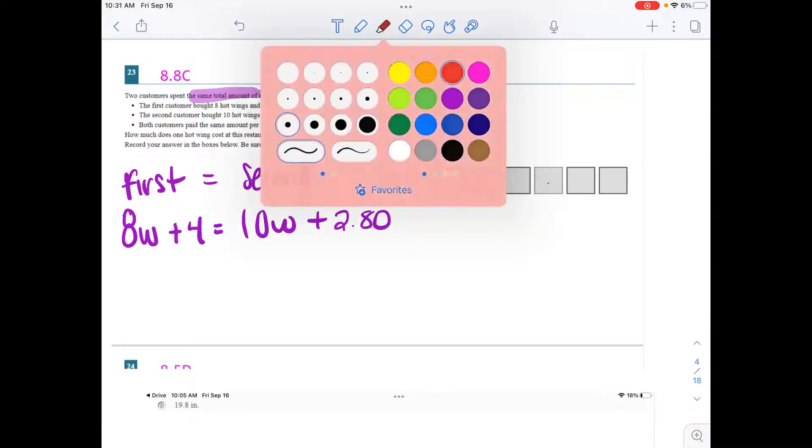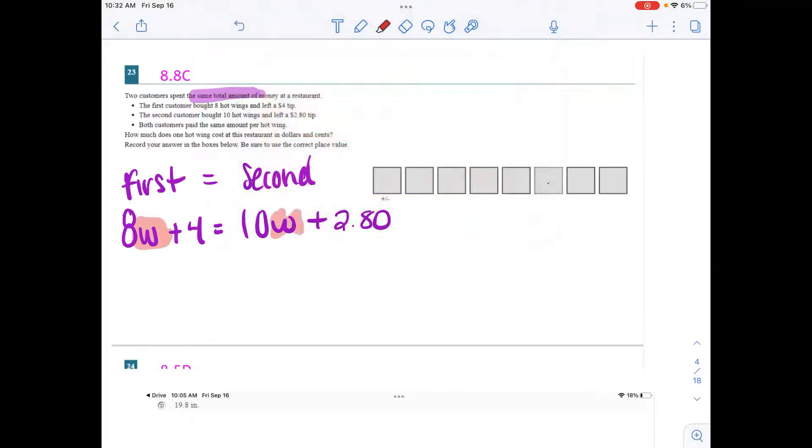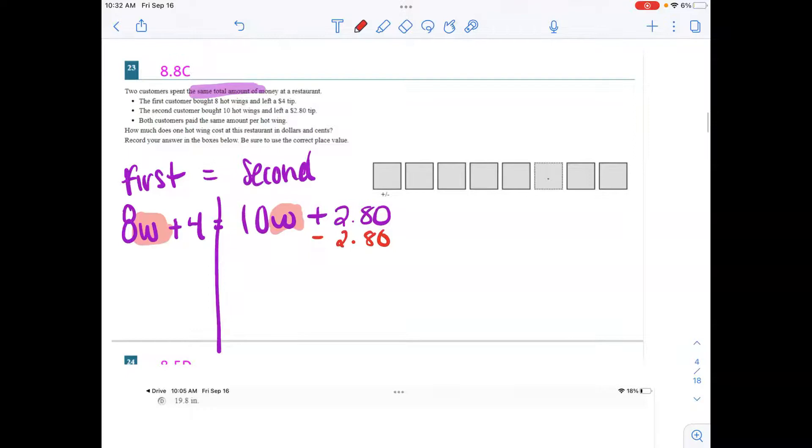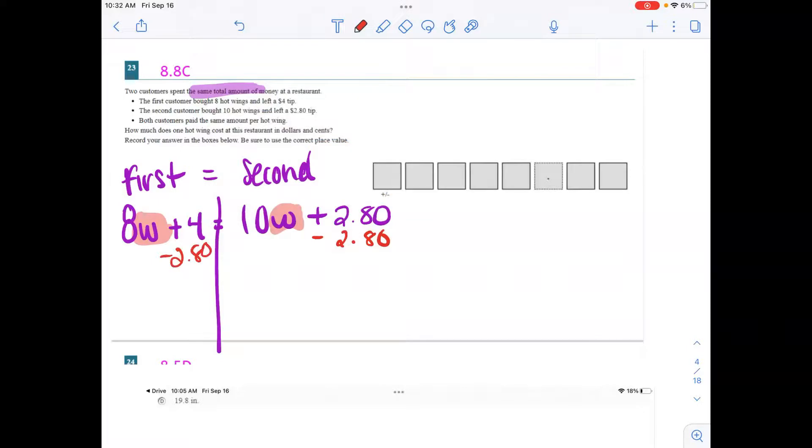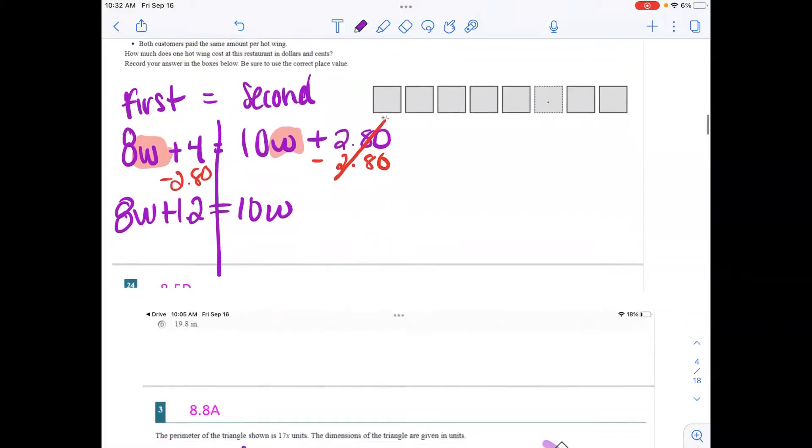So we want to isolate our variables. We want to get our W's together. We want to figure out how much one wing is going to be. I'm going to draw a line down the equal sign, and I'm going to start moving some of these constants. I'm going to move this 280 to the other side, from here. I can't subtract 280 from 8W. Those terms are not alike. So minus 280. This here is 0. So as I simplify and bring everything down, 8W plus, that's going to be $1.20. So 1.2 is equal to 10W.